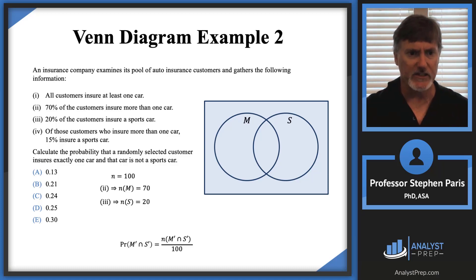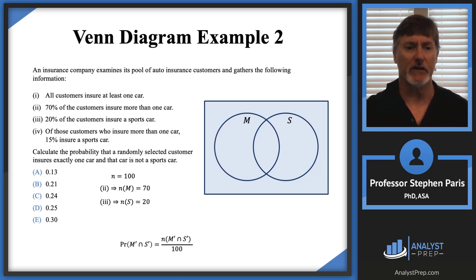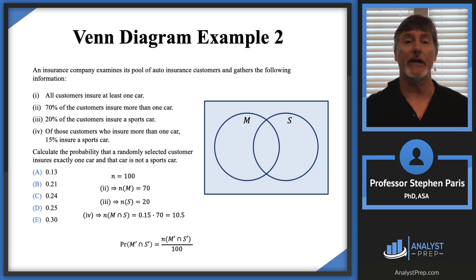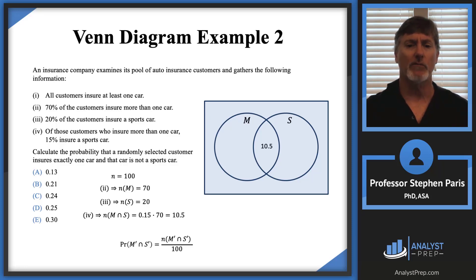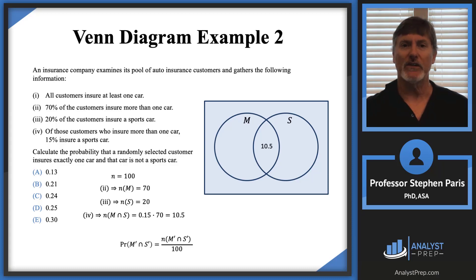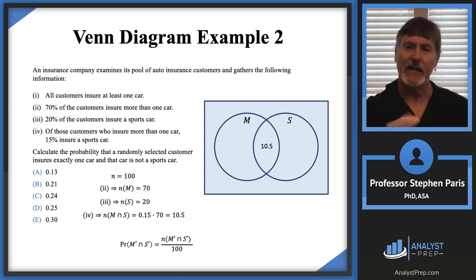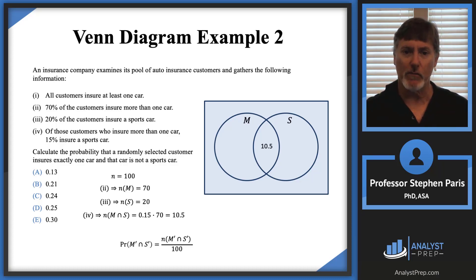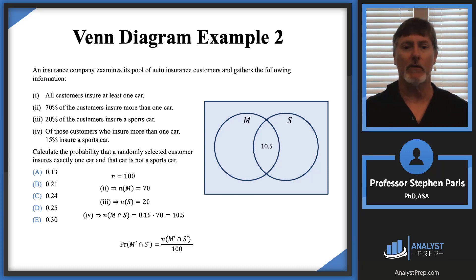Part four is a conditional probability: of the 70 customers insuring more than one car, 15% insure a sports car. So the intersection of M and S is 0.15 × 70 = 10.5. We end up with a decimal, but don't get bogged down — when calculating probabilities we take ratios, so the decimal becomes irrelevant. Just continue filling out the Venn diagram.